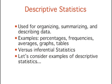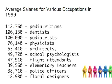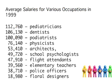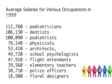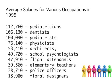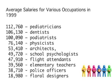Generalizing from a sample to the population it was sampled from is the domain of inferential statistics. Let's consider some examples. This table shows the average salaries for various occupations in 1999. These statistics are referred to as descriptive statistics because, as the name suggests, they describe the data.